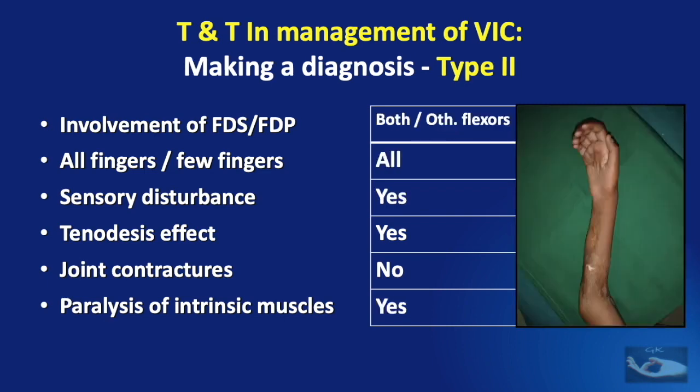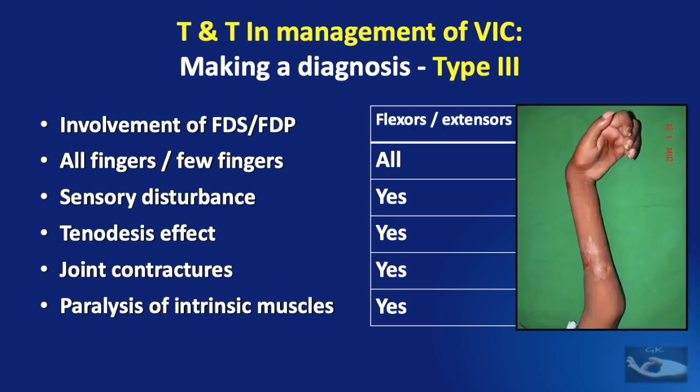If it involves the FDS and FDP of all the fingers and sometimes other flexors like the wrist flexors, and there is a sensory disturbance with a tenodesis effect and paralysis of the intrinsic muscles but with no joint contractures, it is a type 2. In addition to all the above features, if there are joint contractures too, it falls under the type 3 category of VIC.